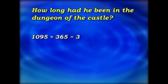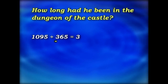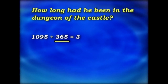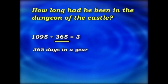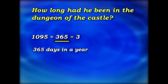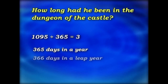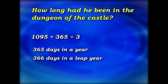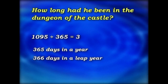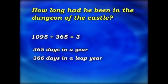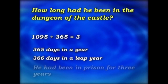1095 divided by 365 equals 3. Why did we divide by 365? Because there are 365 days in a year. Of course, if it's a leap year, there are 366. But for this problem, it had been three years. The poor knight had been in prison for three years.